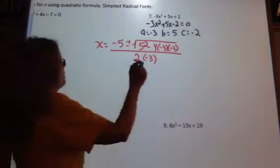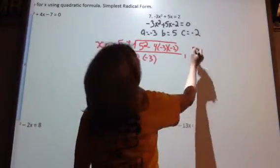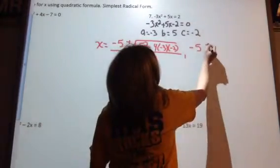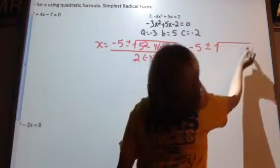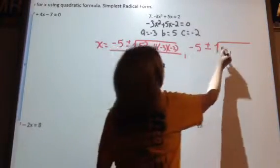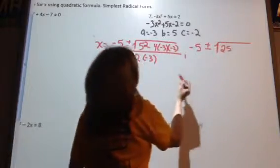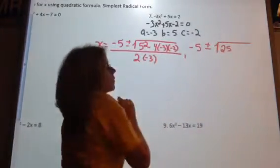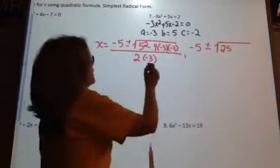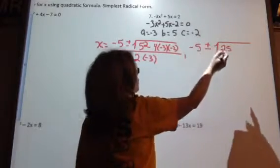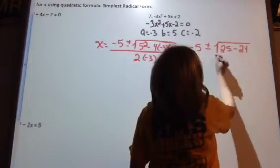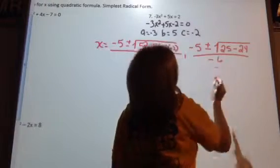Okay, then we can simplify. So we have negative 5 plus or minus. 5 squared is 25. 4 times negative 3 is negative 12. Negative 12 times negative 2 is positive 24. All over negative 6.